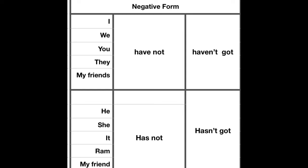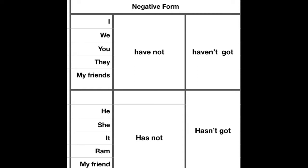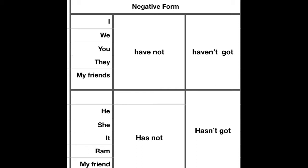Now let's look at how to make negative sentences in the same format. We say 'I haven't got a car' — this is the negative. I have not got a car, or I haven't got a car. We haven't got a car or we have not got a car. Similarly, they have not got a car or they haven't got a car. And for he, she, it — third person singular — he, she, or my friend has not got a car or hasn't got a car. We can use both: 'has not' or short form 'hasn't got a car'. For example: my mother hasn't got a bike. This is the manner in which we make negative sentences.